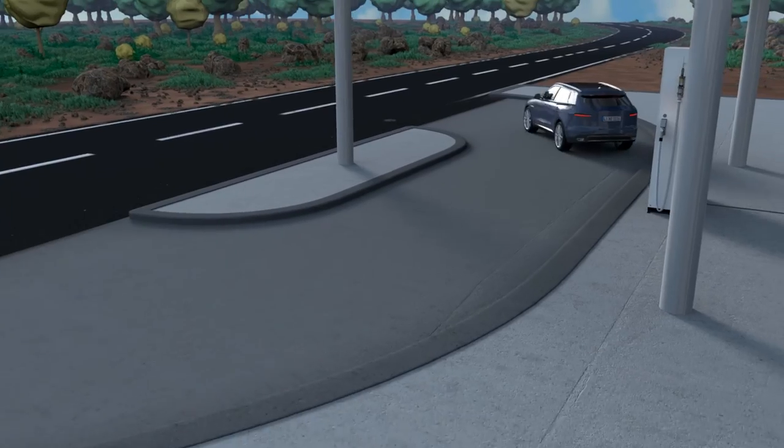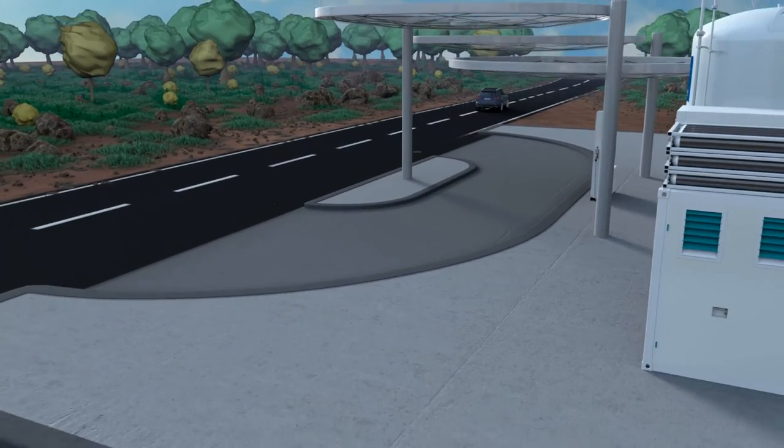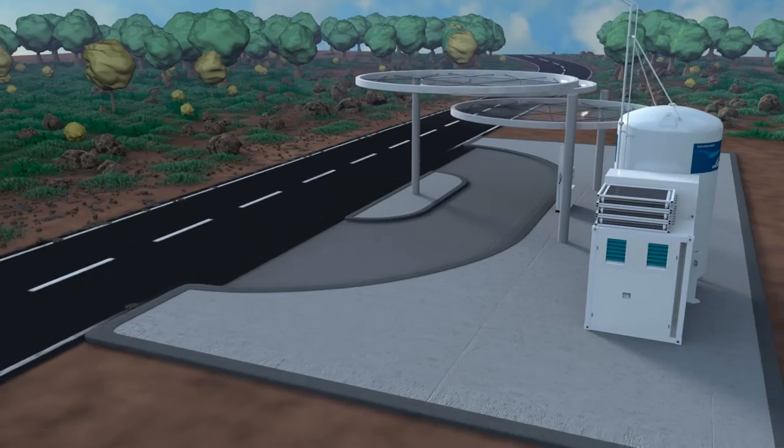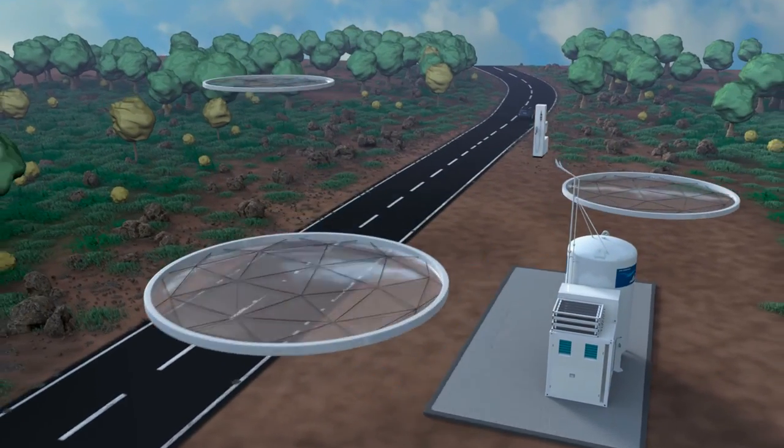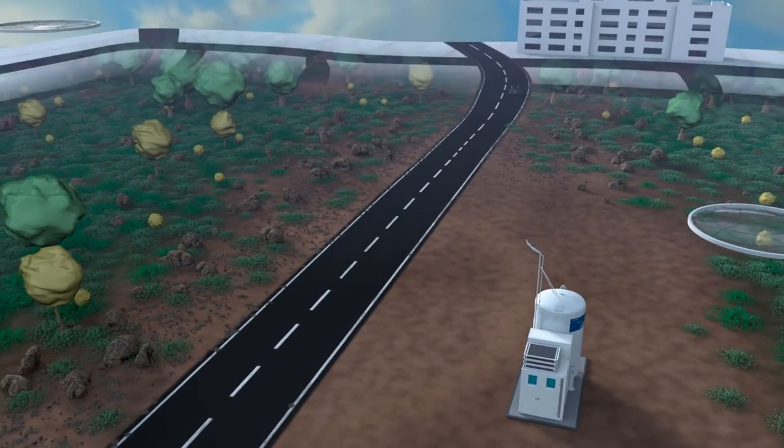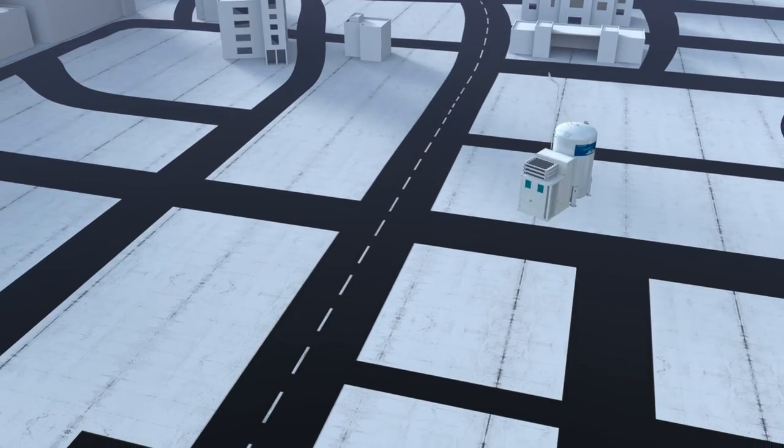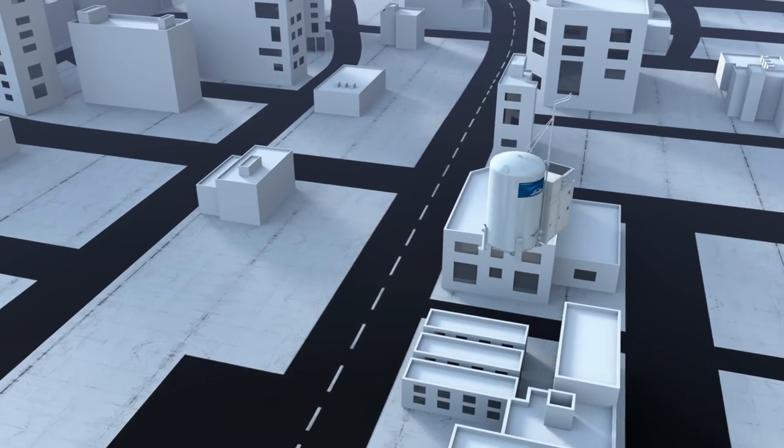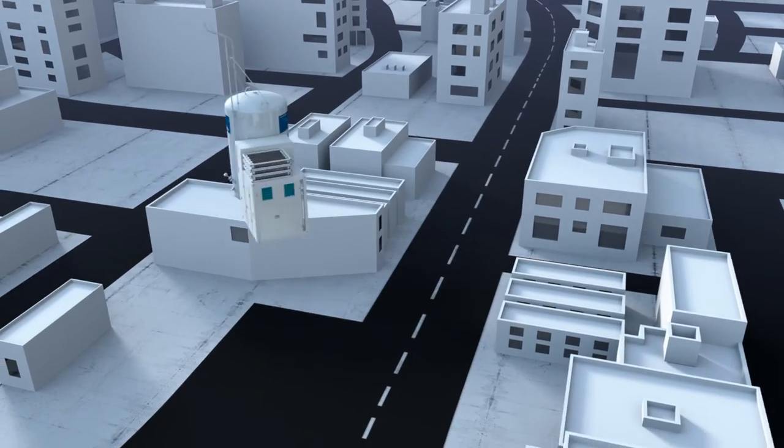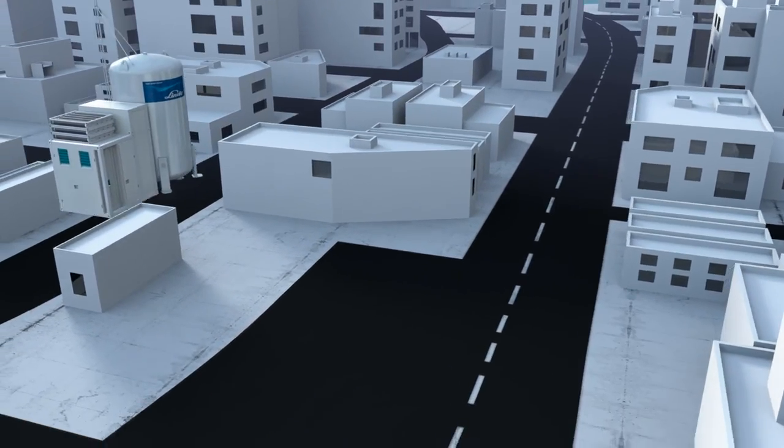The Cryo Pump system is extremely compact. A footprint of only 2.5 by 6.4 meters is sufficient to install the entire system, including the technology container and storage tank. Since the storage tank is lower than most fueling station roofs, the system is highly suitable for inner city locations with limited available space.